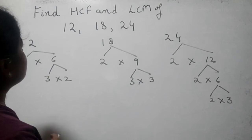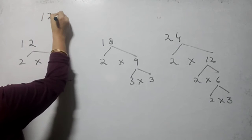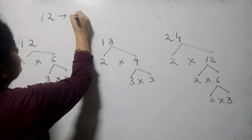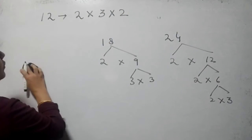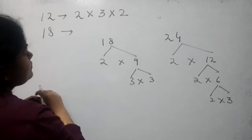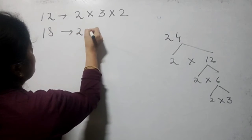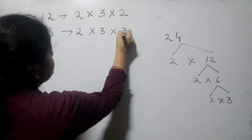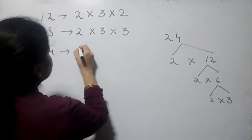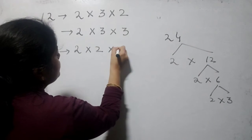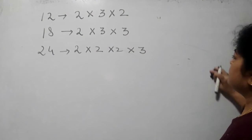Now write it in proper manner. For 12, we have 2×3×2. For 18, we write 2×3×3. For 24, we have 2×2×2×3. Now we have to find HCF and LCM for these three.